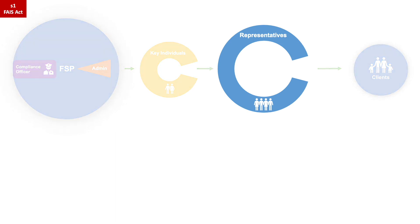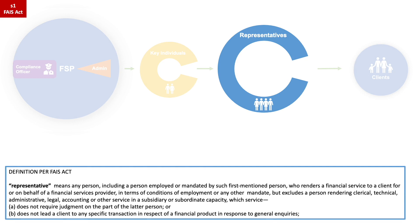We are going to focus on the representative and who is defined as a representative per Section 1 of the FAIS Act. The definition states: 'Representative means any person, including a person employed or mandated by such first-mentioned person, who renders a financial service to a client for or on behalf of a financial services provider, in terms of conditions of employment or any other mandate, but excludes a person rendering clerical, technical, administrative, legal, accounting or other service in a subsidiary or subordinate capacity, which service does not require judgment on the part of the latter person.'